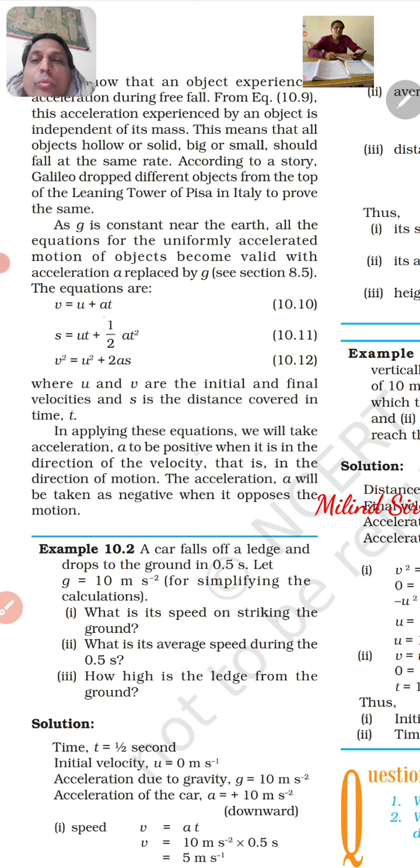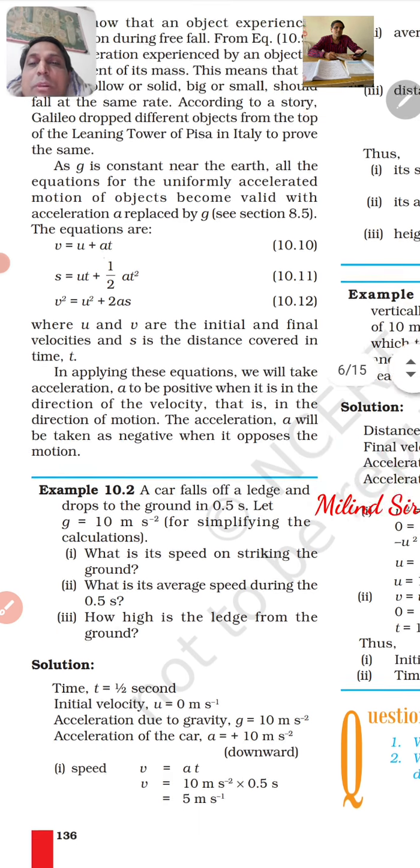The equations are: v equals u plus at, s equals ut plus half at squared, v squared equals u squared plus 2as.